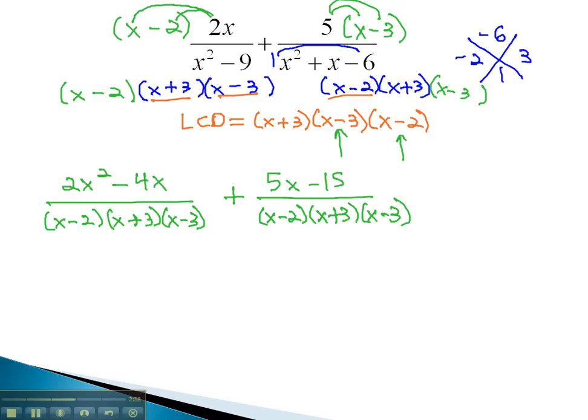Now that we have a common denominator, we can simply combine like terms. In the numerator, we have 2x squared, minus 4x plus 5x is plus x, minus 15, over the common denominator, x minus 2, x plus 3, x minus 3.